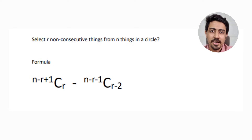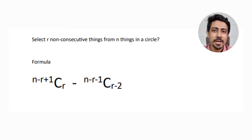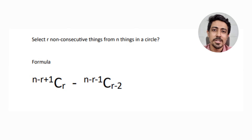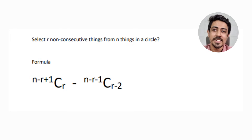An extension of this formula: suppose you're asked to select r non-consecutive things from n things placed in a circle. You will never be asked with a gap of 2 or 3 in a circle — non-consecutive itself is very difficult for circular arrangement. The formula is: (n − r + 1)Cr − (n − r − 1)C(r − 2). If you're a CAT 24 aspirant, try to understand the concept behind this rather than just memorizing it. Notice the first part (n − r + 1)Cr is exactly the same as for things placed in a line. The extra subtracted component exists because in a circle, the last person can be adjacent to the first person — which is not the case in a line — so some cases get reduced. That's why you have the second component.